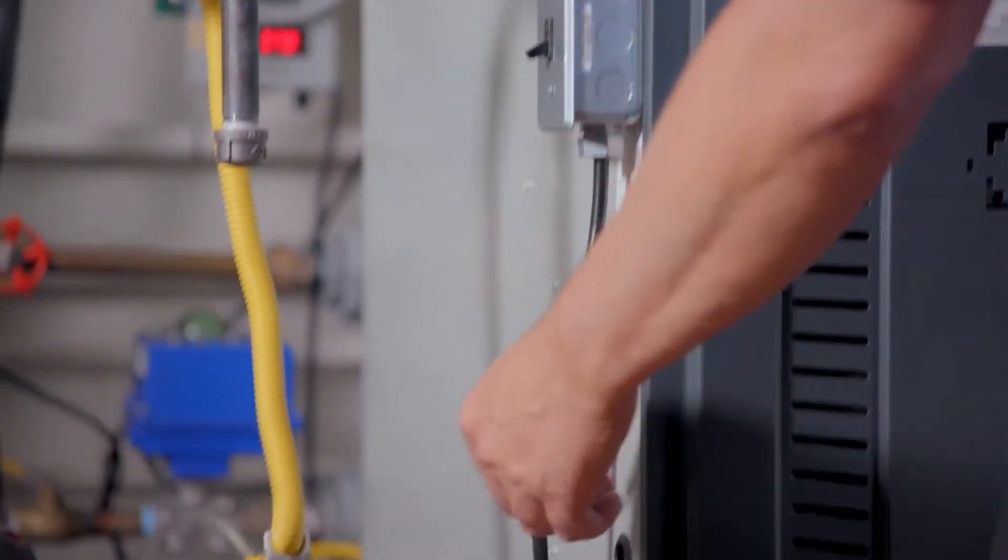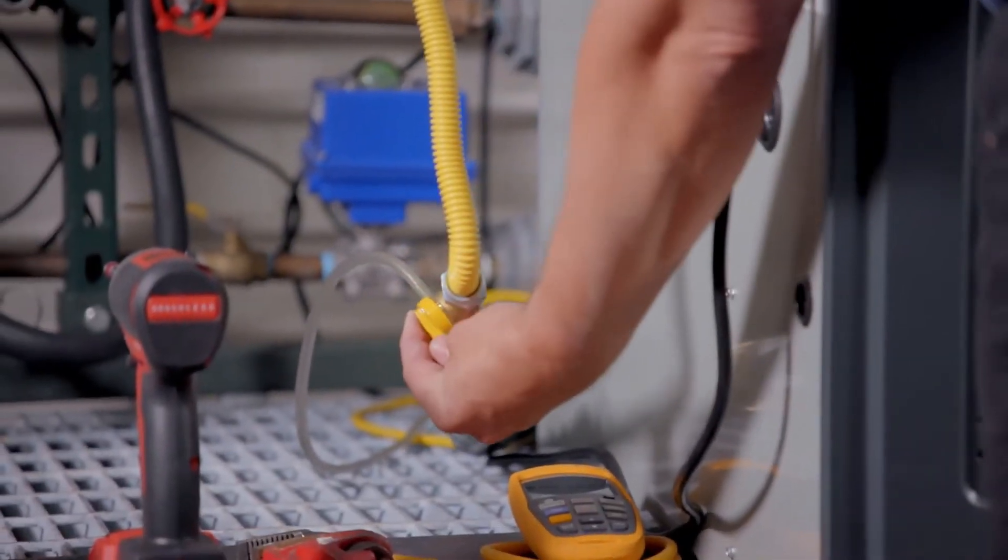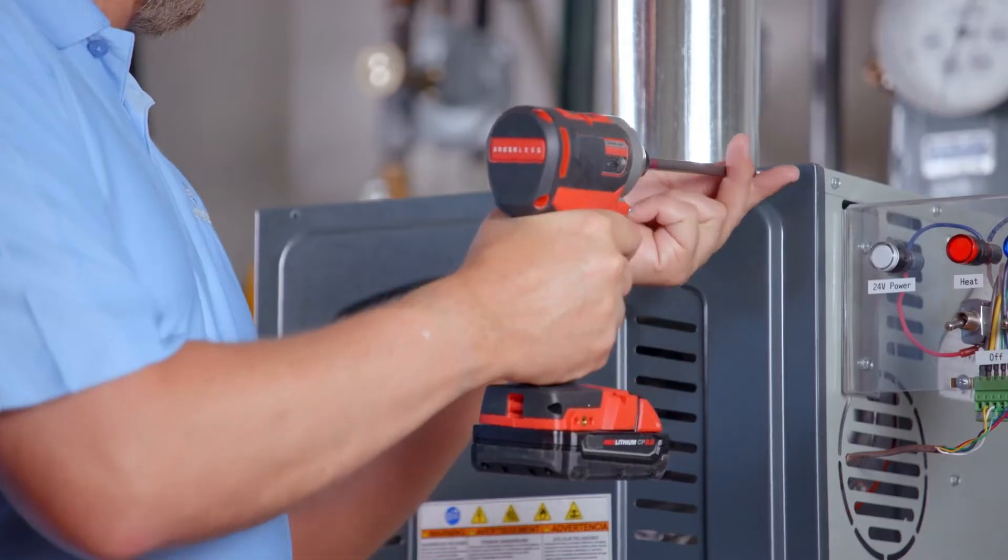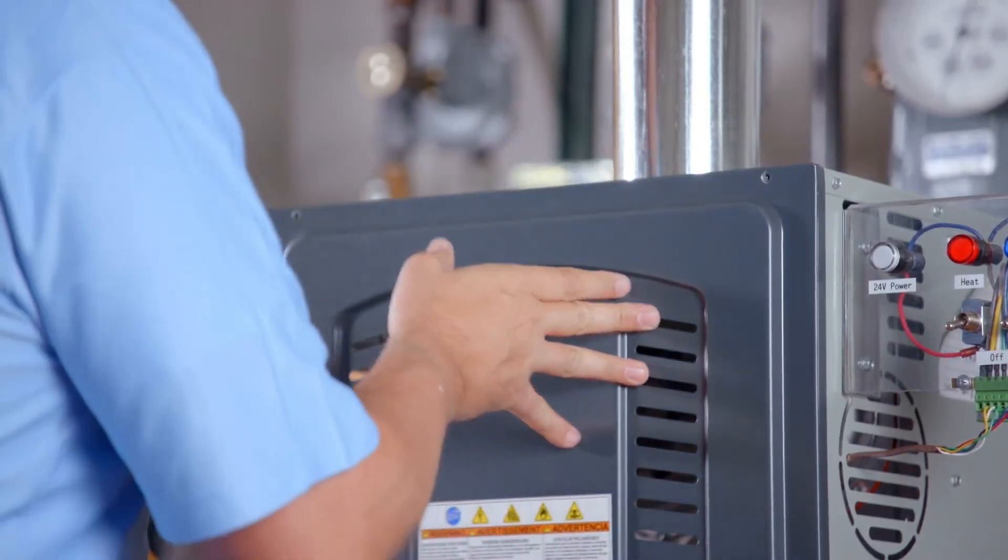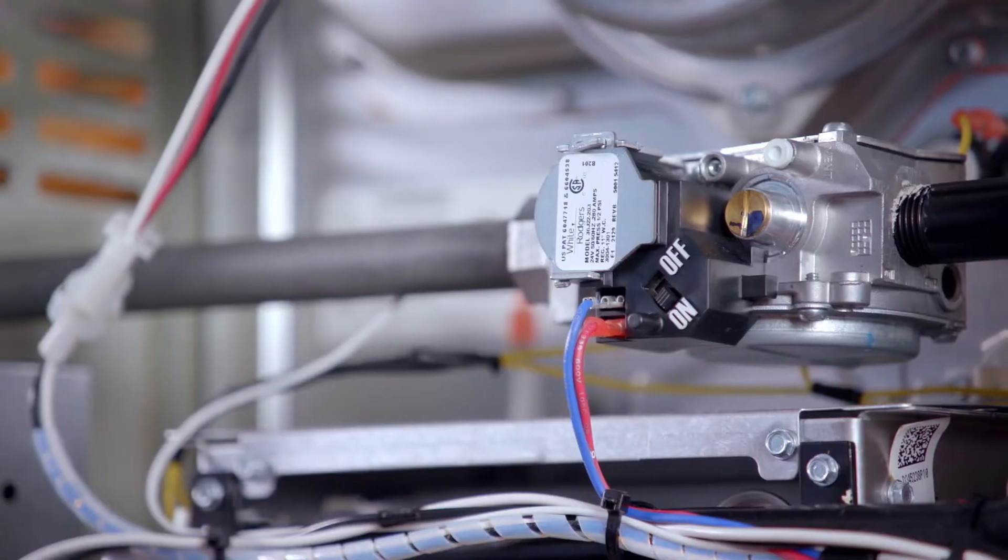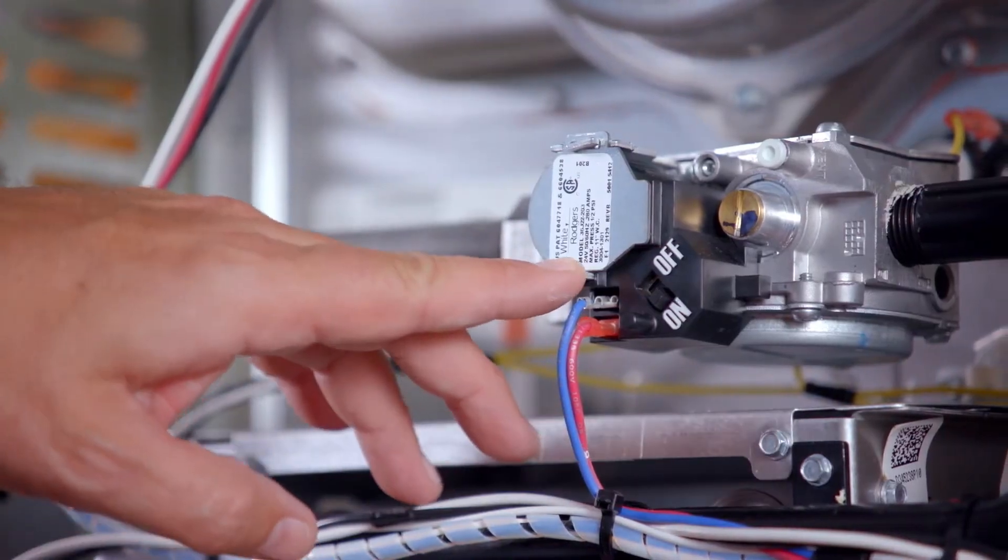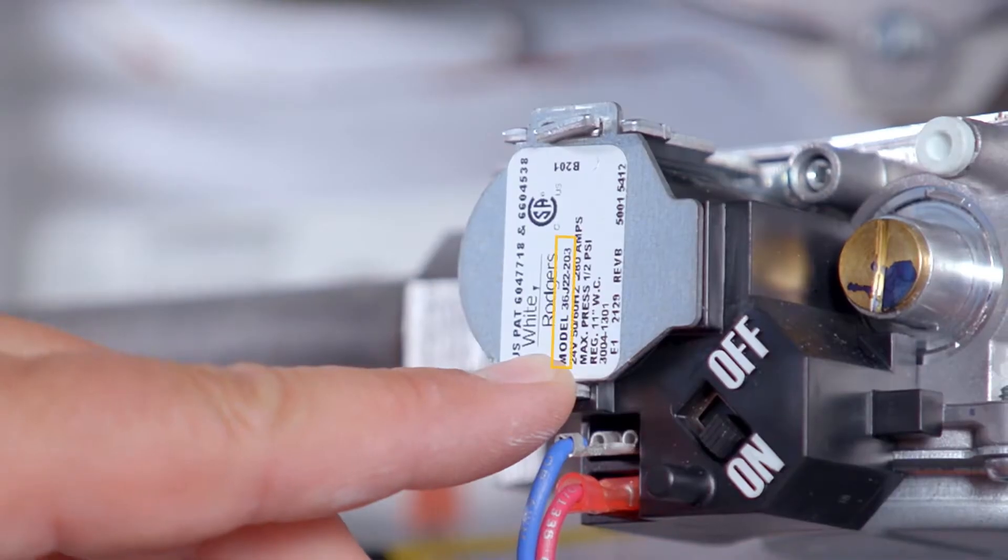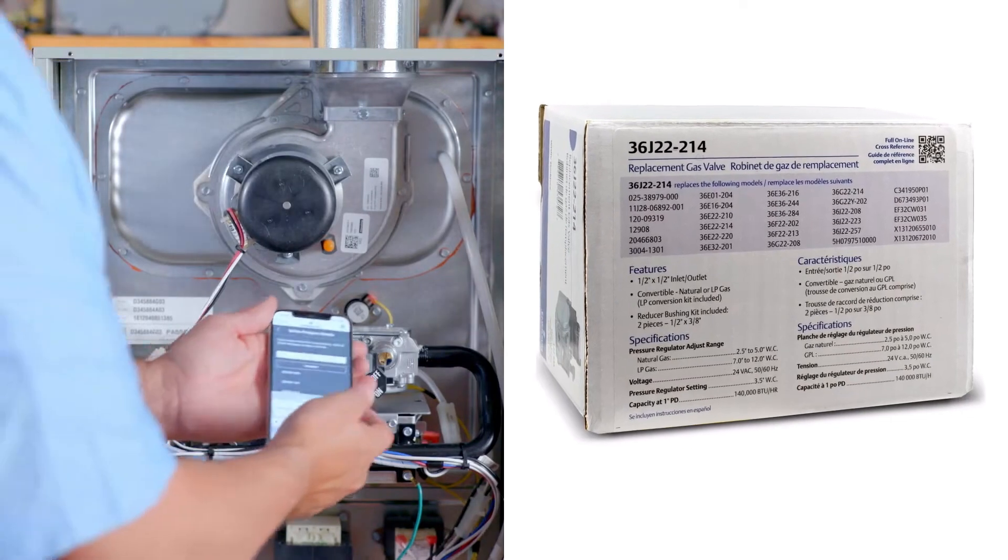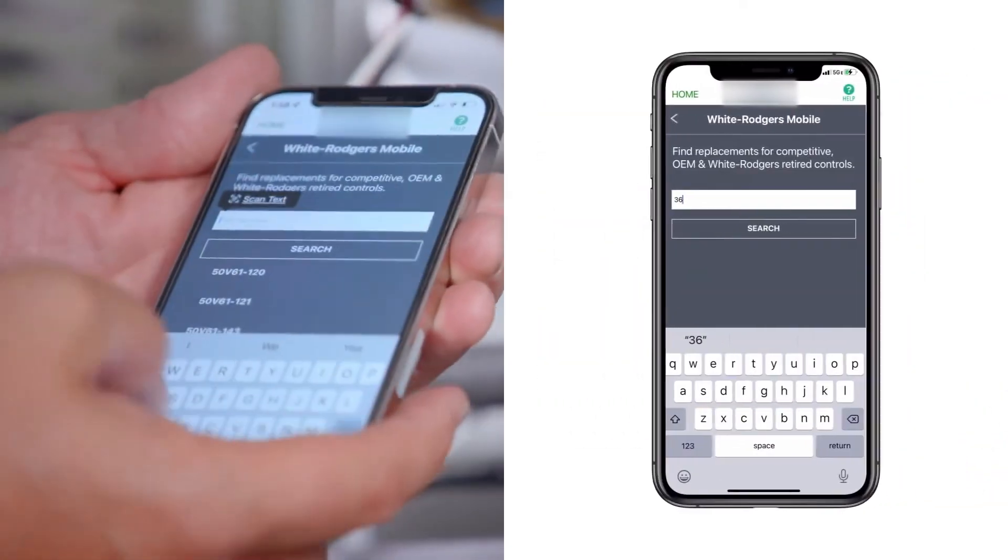First, ensure power and gas are disconnected prior to servicing the unit. Remove the access panel. Check the part number on the existing gas valve and verify it can be replaced with the 36J22214 Gas Valve Kit. Use the cross-reference table on the side of the carton or the White Rogers mobile app.